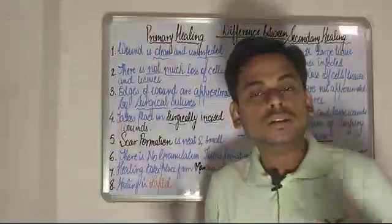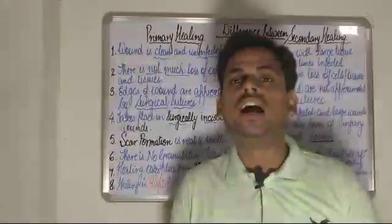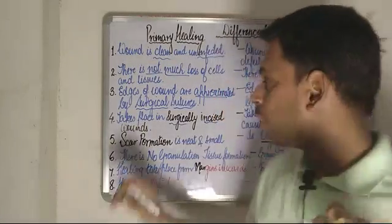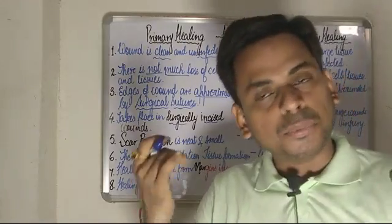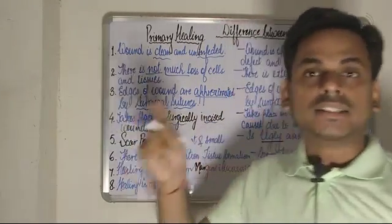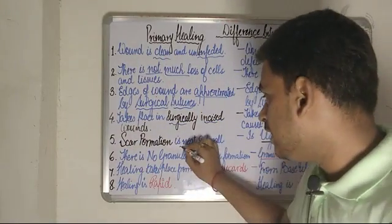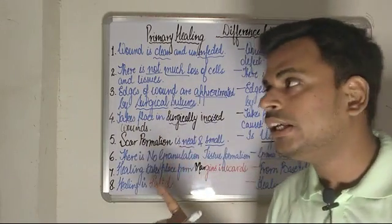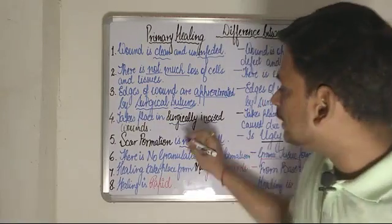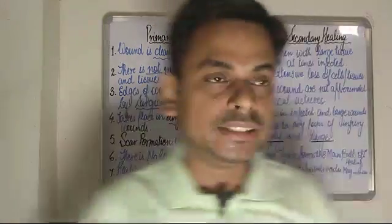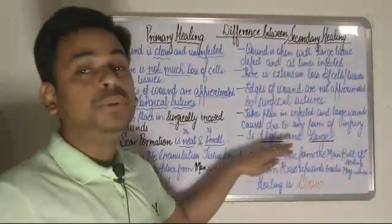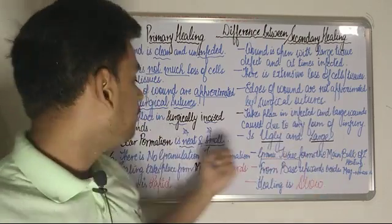After complete wound healing, scar tissue is always formed. In primary healing, the scar formed is neat and small. In secondary healing, the scar that ultimately develops is usually very ugly and can be large.